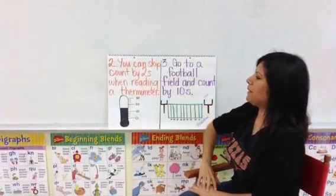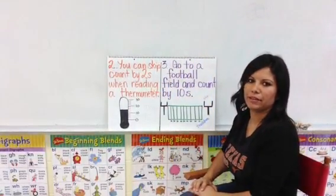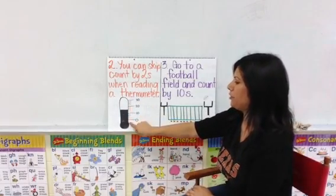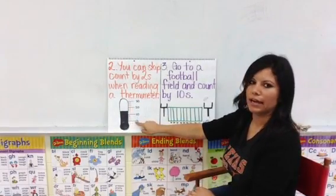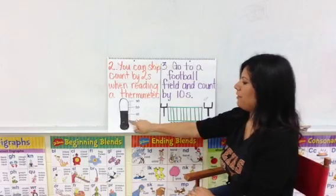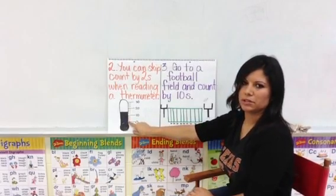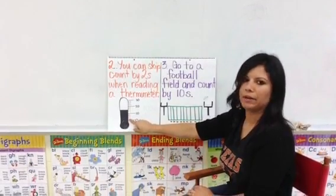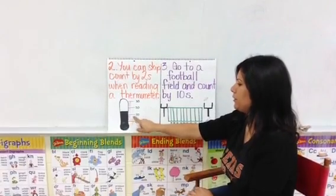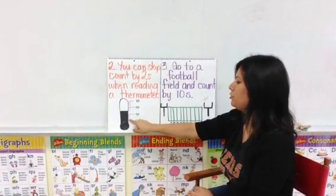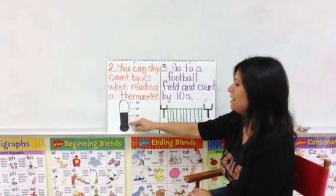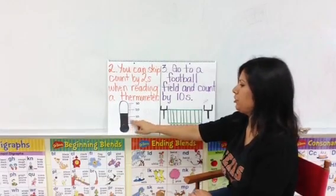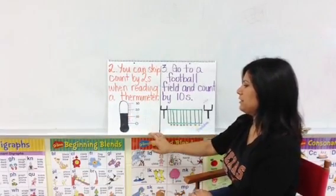You can skip count by twos when you read a thermometer. So for example, if you have a thermometer here, you're going to see longer lines, and those count by tens. But then you'll also see smaller little black lines in between those, and those are counted by two. So again, from zero to ten, you have two, four, six, eight, ten, and so on. So on this thermometer, when you read it, it shows it at fourteen degrees Fahrenheit.